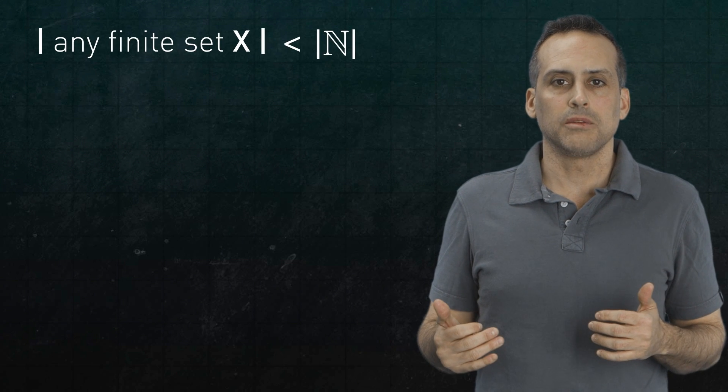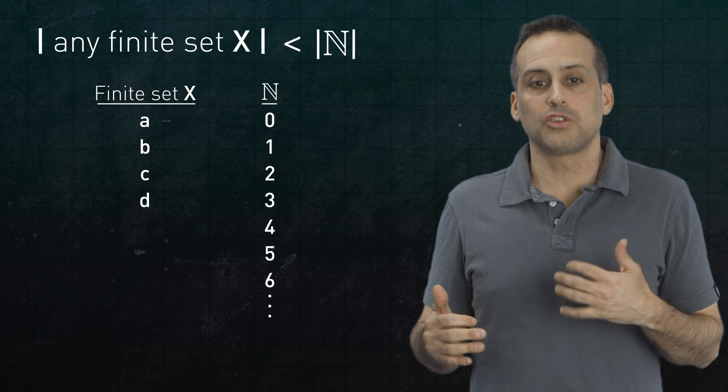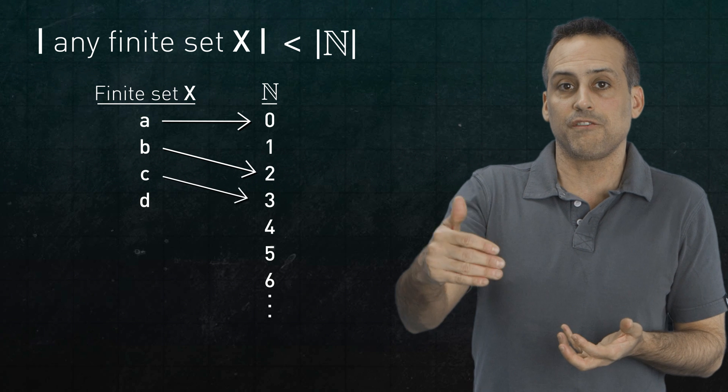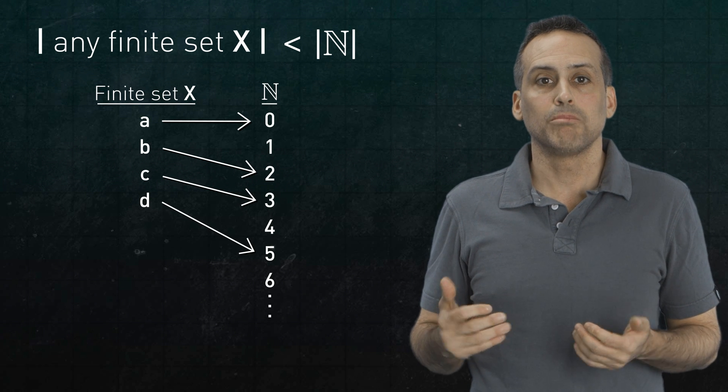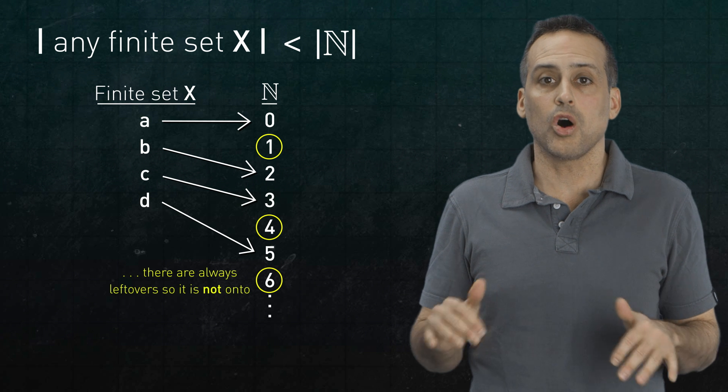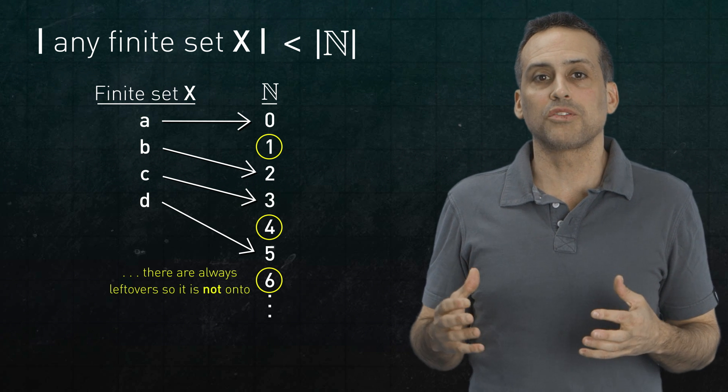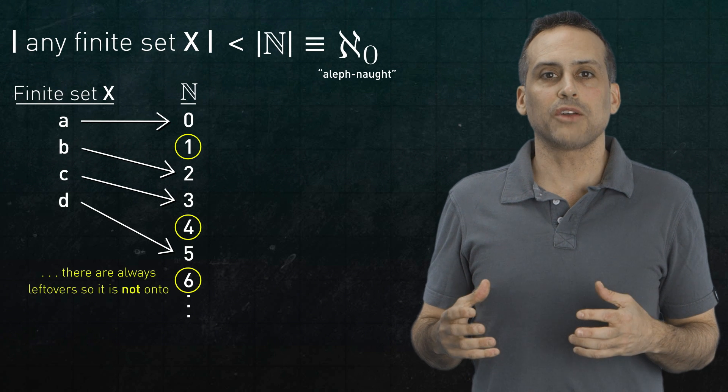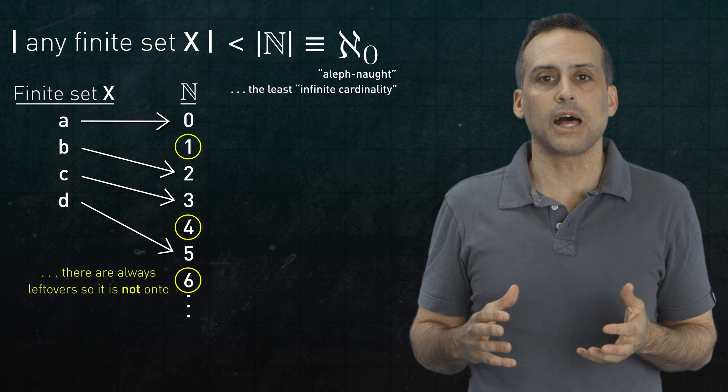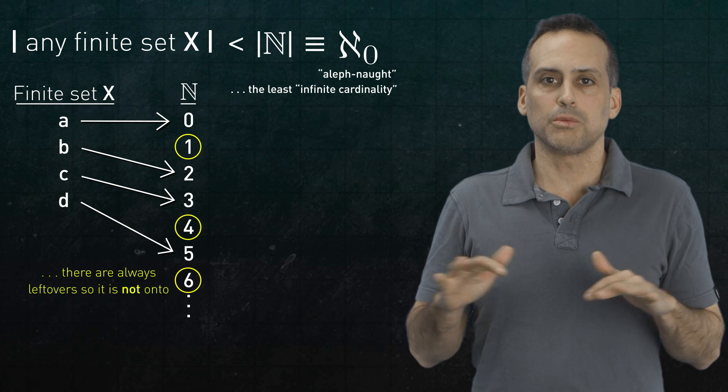Notice that the size of the natural numbers has to be strictly greater than that of any finite set. How come? Because you can map each element of a finite set to a distinct natural number. In other words, you can inject a finite set into the naturals. But you will always have naturals left over when you do so. The injection is not onto. The cardinality of the natural numbers, abbreviated with the symbol Aleph-Not, turns out to be the least infinite cardinality. And yeah, I know some people pronounce this Aleph-Null. I don't do that. Tomato, tomato.